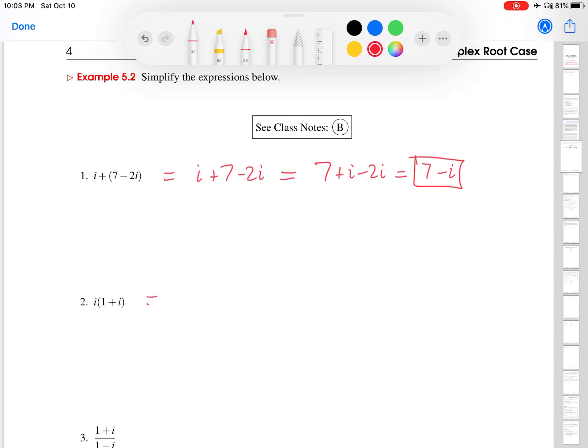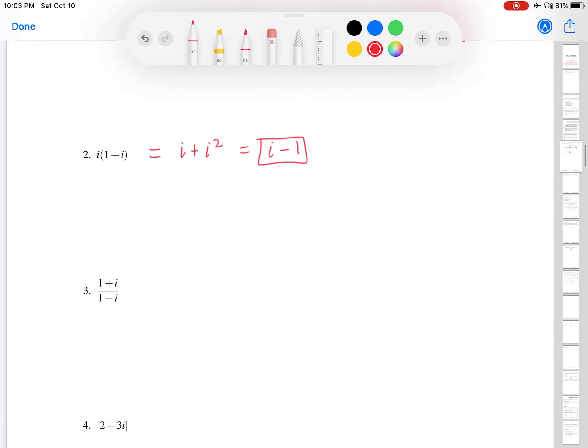And then similar thing down here. So I can distribute the i here to get i plus i squared. And then I use the fact that i squared is negative 1 to get i minus 1. So that's the second exercise there.